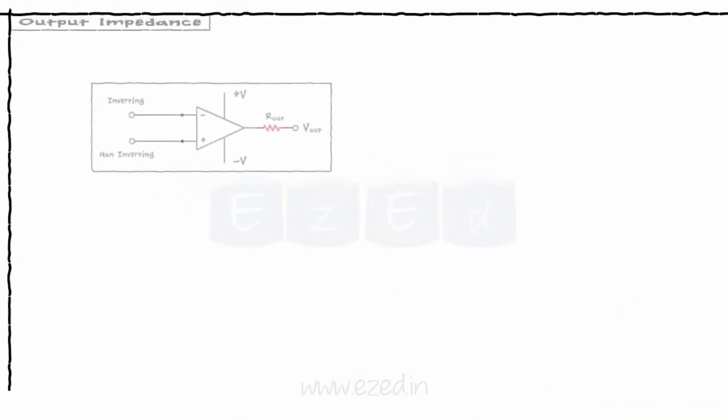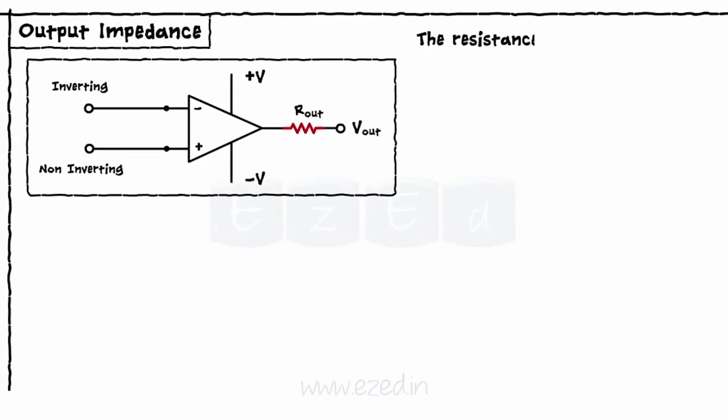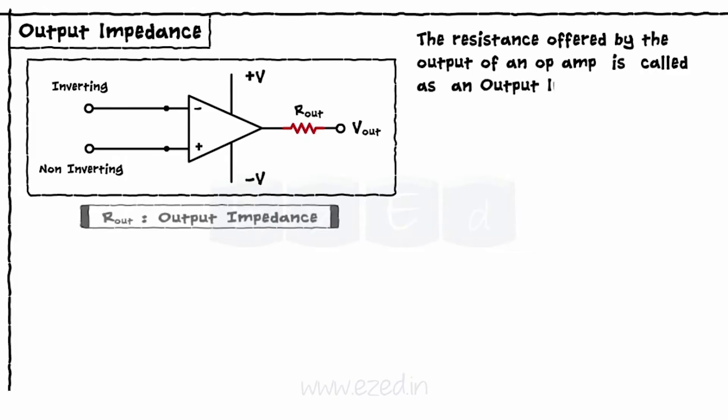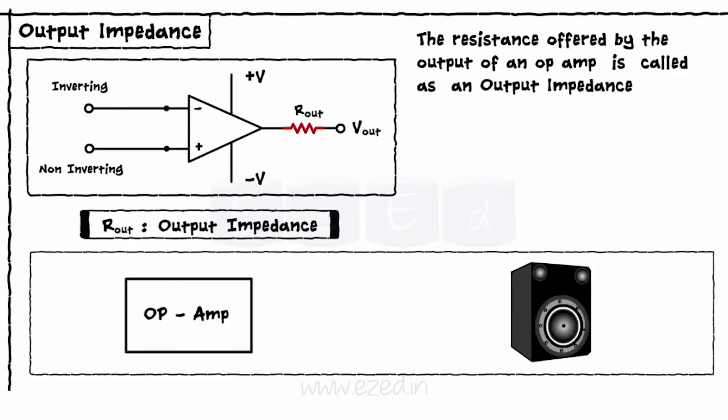The third term is output impedance. The resistance offered by the output of an Op Amp is called output impedance. Generally, an output device like a speaker is connected next to an Op Amp.